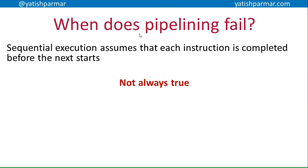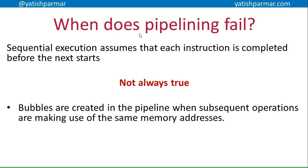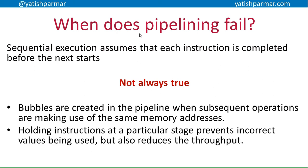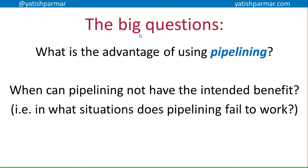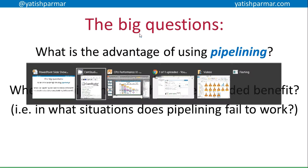So when does pipelining fail? Bubbles are created in the pipeline when subsequent operations use the same memory addresses. Holding an instruction at a particular stage prevents incorrect values being used, but it reduces the pipeline's throughput. In summary: pipelining improves throughput by making use of idle CPU components, but it can fail when dependent instructions create bubbles. In reality, pipelining isn't always as fast as the ideal scenario — and that's the end of the CPU performance videos.